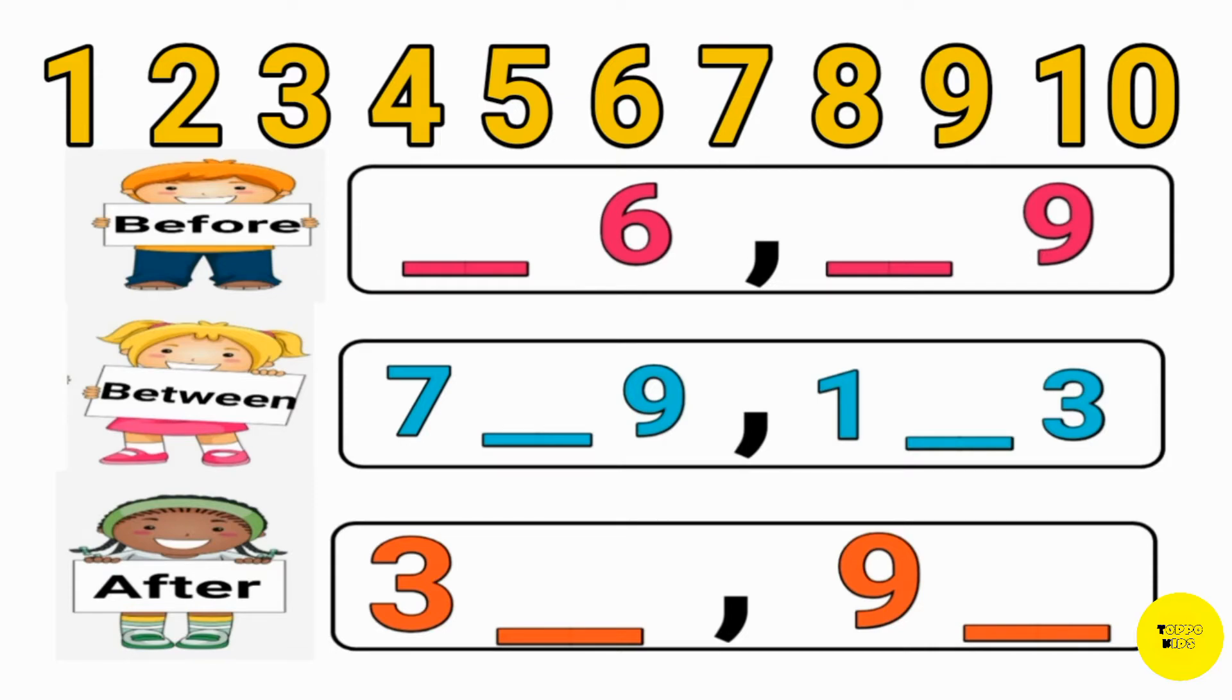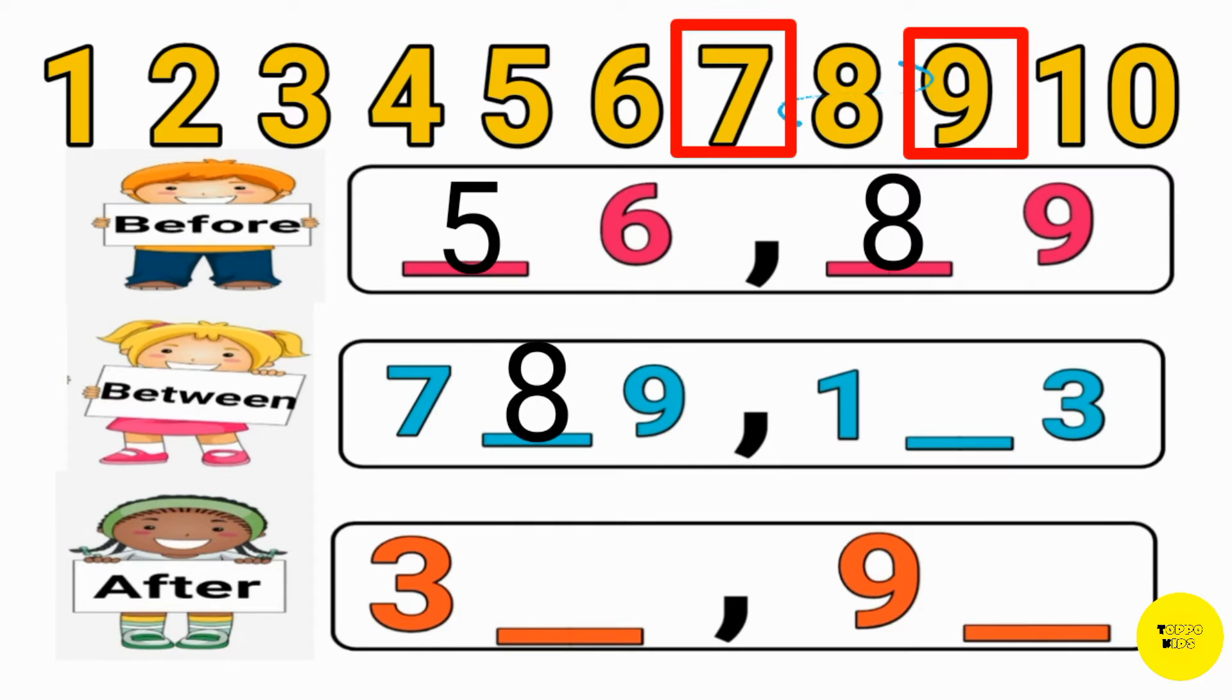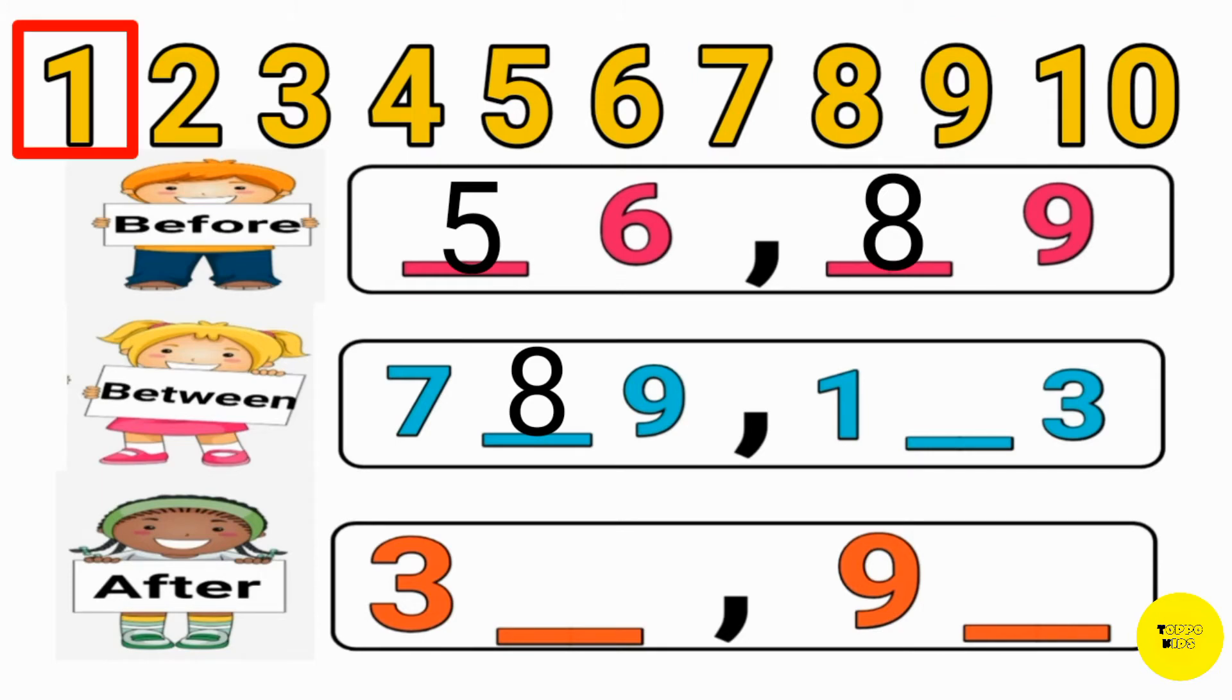First is Before. As you know, Before means comes first. So tell me, what number is Before 6? Yes, 5. Very good. Next is 9. So tell me, what number is Before 9? Yes, 8. Very good. Next is Between. As you know, Between means comes in the middle. So, you have to tell what number is Between 7 and 9? Yes, 8. Next is 1-3. You have to tell what number is Between 1 and 3? Yes, 2. Very good.